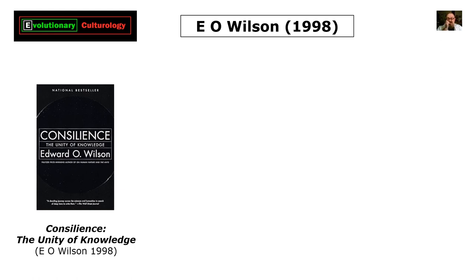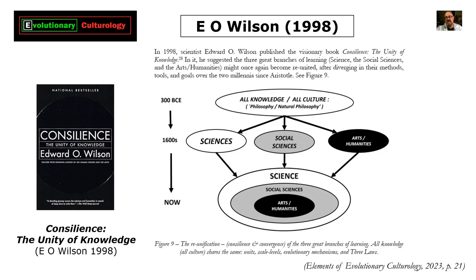Ed Wilson, in his great book Consilience: The Unity of Knowledge from 1998, makes the point — and this is also an extract from Elements of Ev Cult — that in 1998, scientist Edward O. Wilson published the visionary book Consilience: The Unity of Knowledge. In it, he suggested the three great branches of learning — namely science, the social sciences, and the arts and humanities — might once again become reunited after diverging in their methods, tools, and goals over the two millennia since Aristotle.